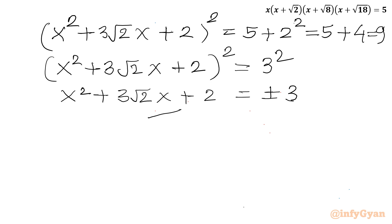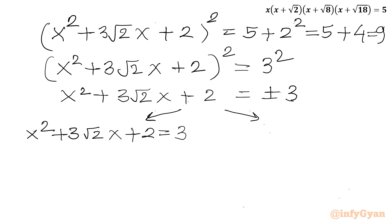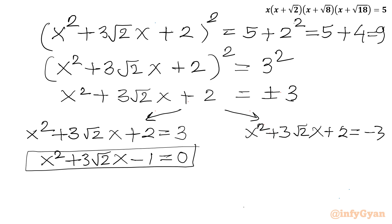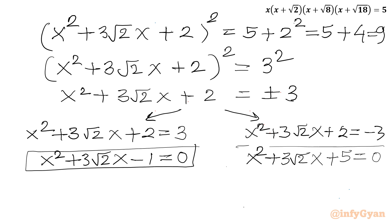Now I can frame two equations from here — one with plus 3 and another with minus 3. First equation: x² plus 3√2·x plus 2 equals 3, giving x² plus 3√2·x minus 1 equals 0. Second equation: x² plus 3√2·x plus 2 equals negative 3, giving x² plus 3√2·x plus 5 equals 0. I will apply the quadratic formula to solve both equations.